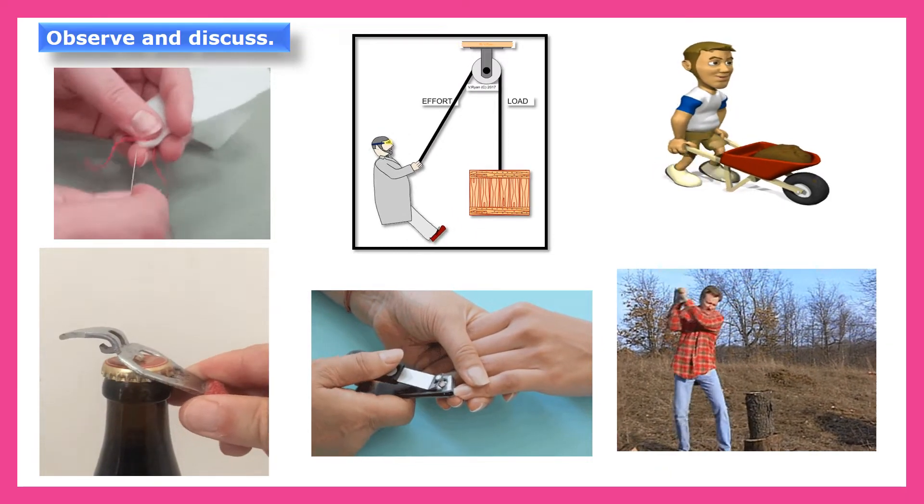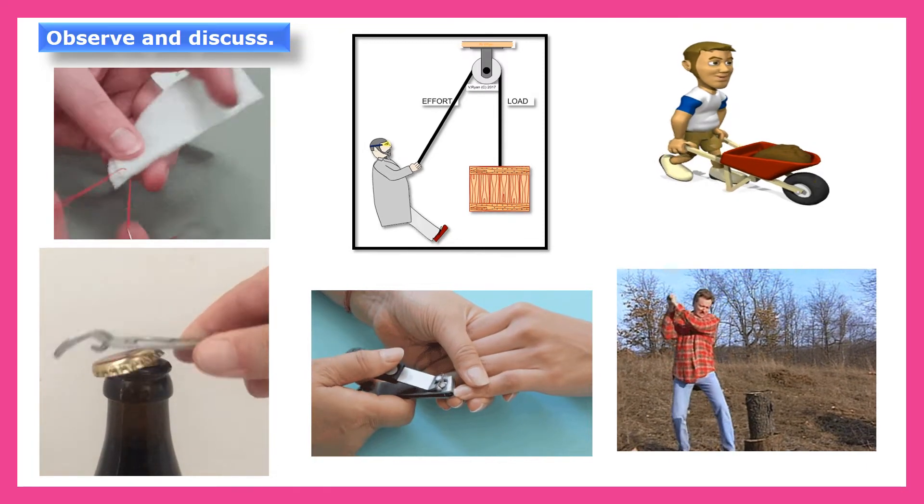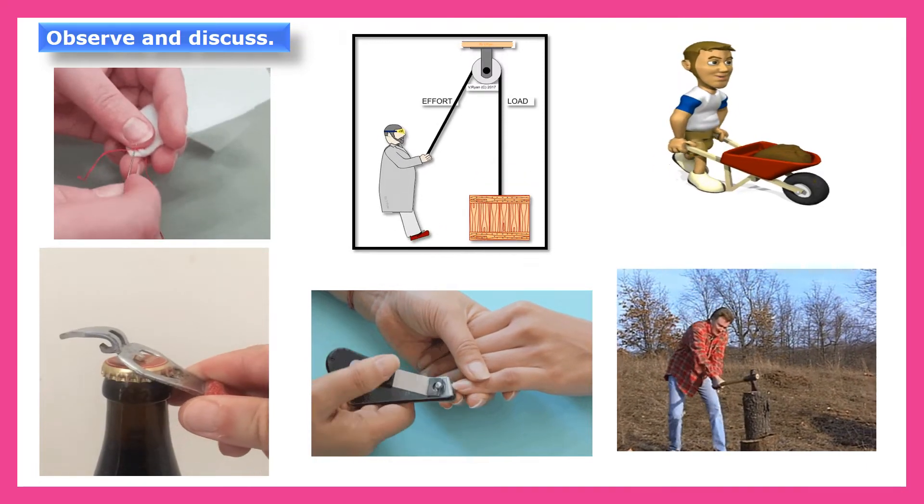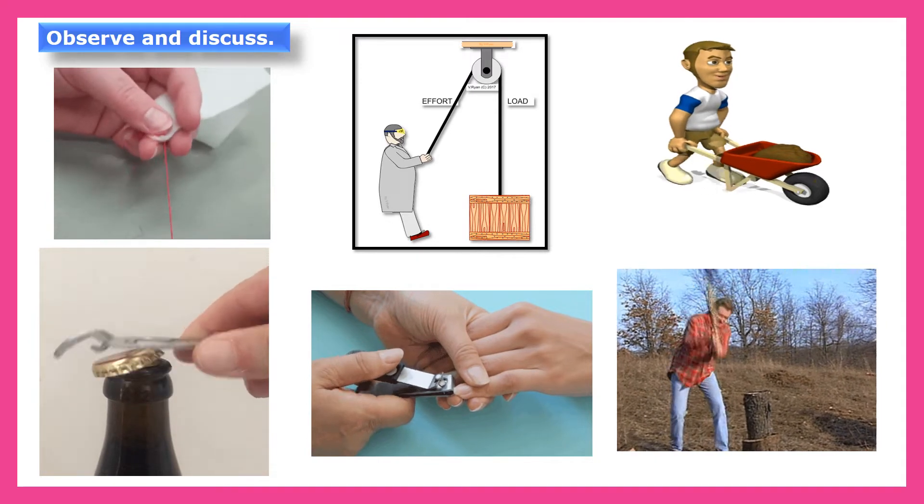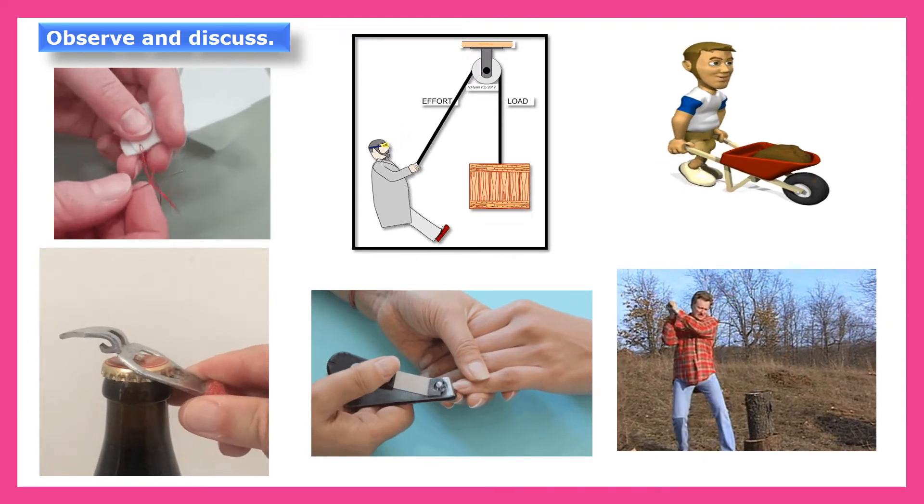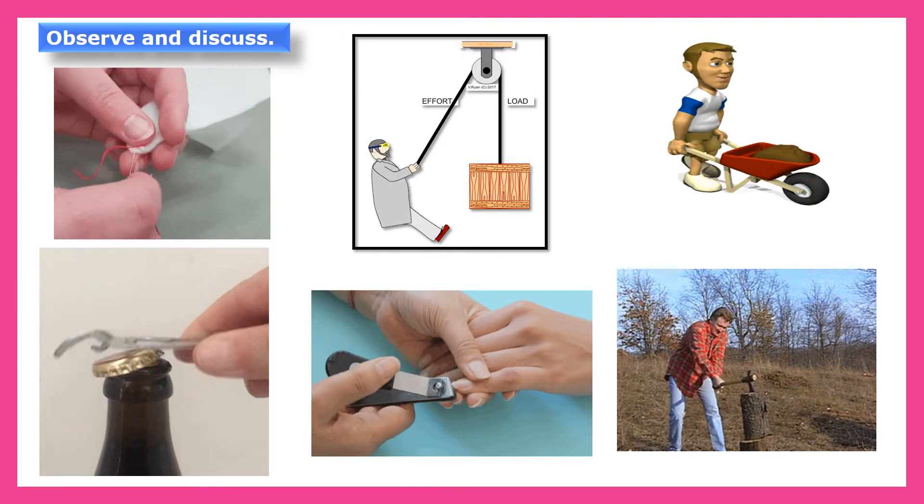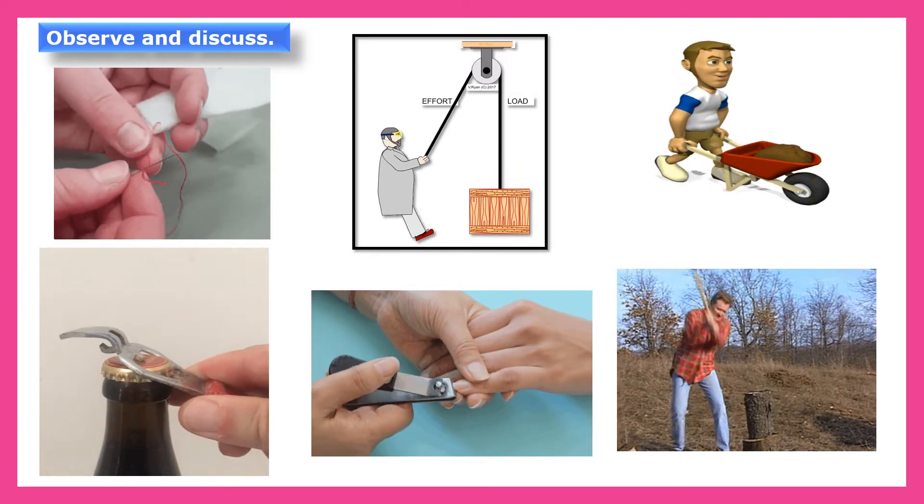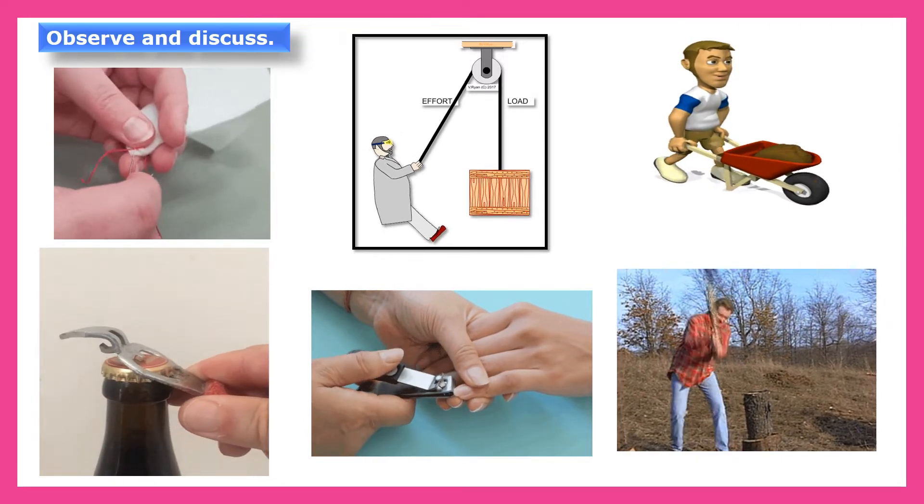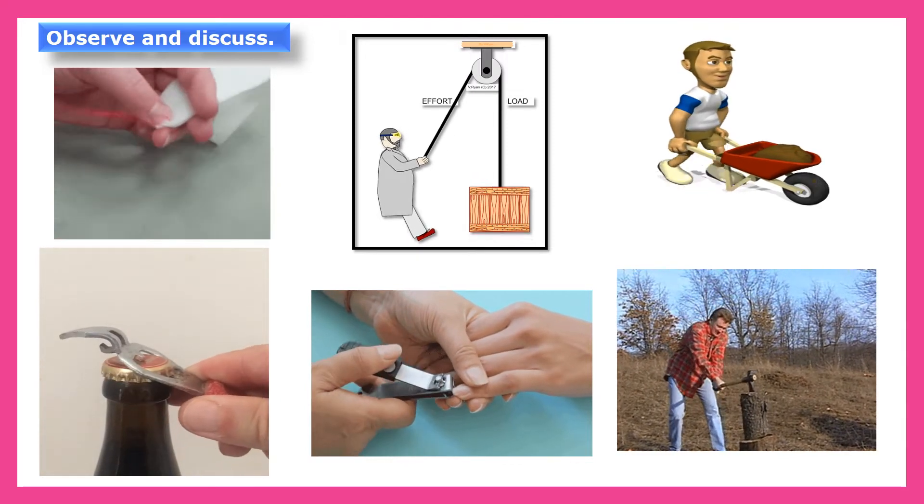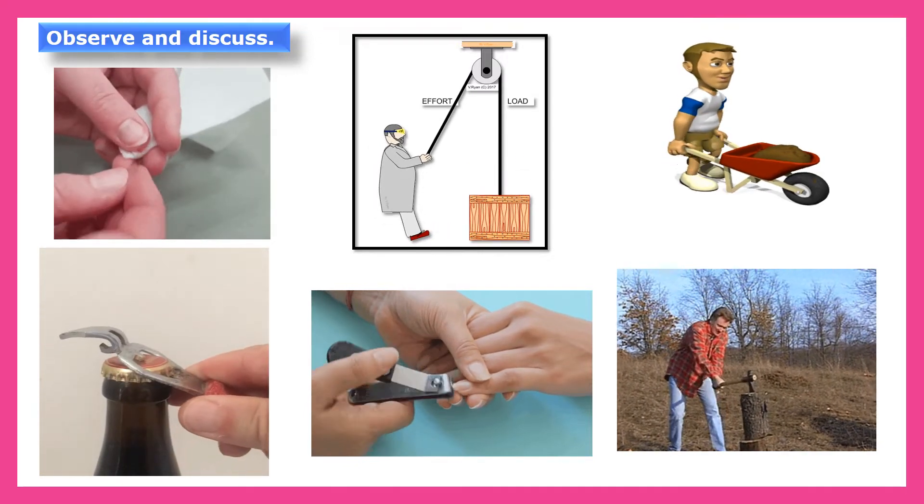Needle helps in stitching and joining the two separate parts of the clothes. Wheelbarrow helps to pull heavy loads of luggage easily. Bottle opener is used to open the seat cap easily. Nail cutter is used for trimming the nails easily and safely. Pulley helps to lift the weights easily. We can pull up the thing efficiently with the help of a pulley. And axe is used for chopping the food. So all these are the simple machines and we are using all these simple machines in our day-to-day life.